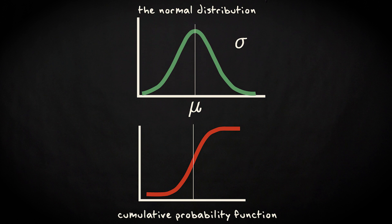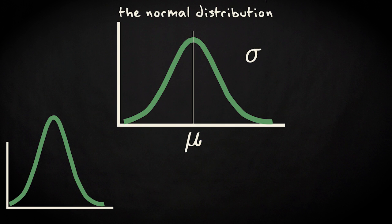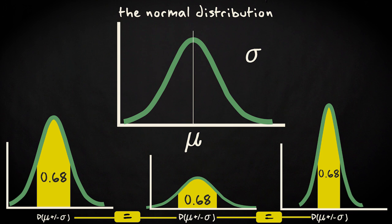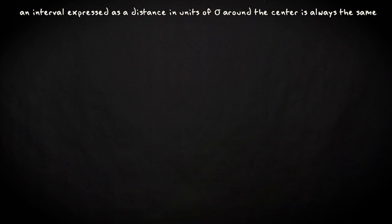Interestingly, while the curve changes with any change in these two parameters mu and sigma, the probability for an interval expressed as a distance in units of sigma around the center is always the same. Let me illustrate this.